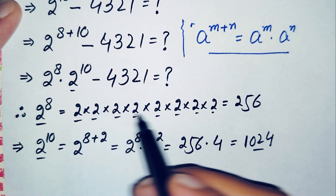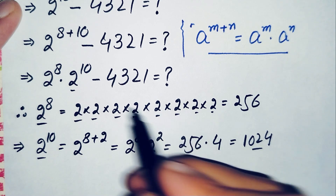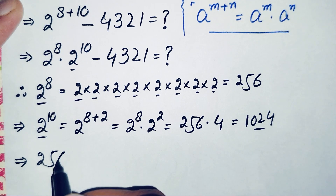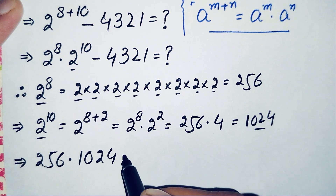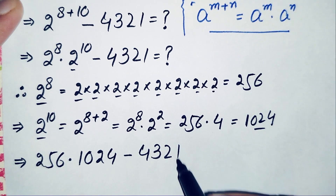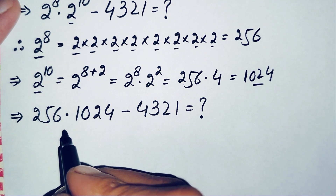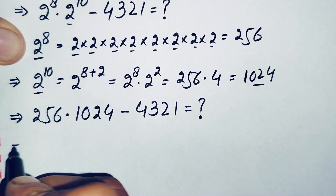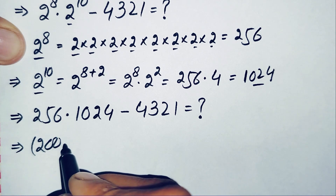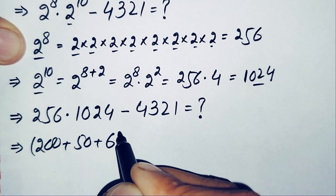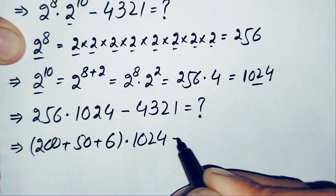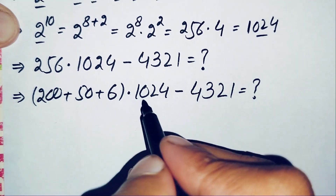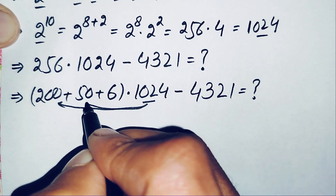Now we replace 2^8 with 256 and 2^10 with 1024 in our equation, giving us 256 × 1024, minus 4321. To multiply these without a calculator, we decompose 256 as 200 plus 50 plus 6, so the expression becomes (200 + 50 + 6) × 1024, minus 4321.